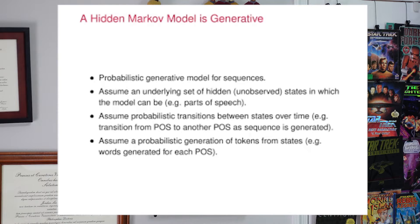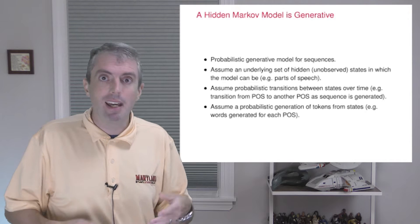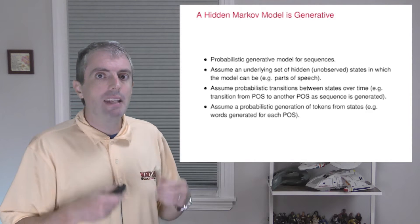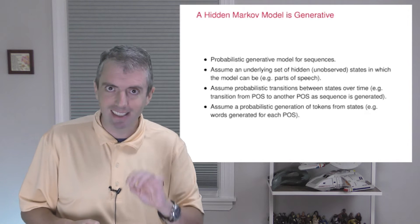So now hopefully you can understand the name. Hidden, in that you don't know what the parts of speech are, they're unobserved. Markov, you transition from the current state to the next state. And Model, it's a model for generating text. And all of these components are defined probabilistically. We'll make this more formal in just a second.